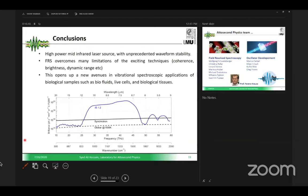Just to conclude, what I have shown is a very high-power mid-infrared laser source which has unprecedented wavelength stability. The slide I skipped shows we have attosecond-level stability in our measurement—few tens or hundreds of attoseconds, and attoseconds is 10 to the power minus 18 seconds. It overcomes many limitations of other techniques such as coherence, brightness, and dynamic range. Altogether, this opens up a new avenue of applications in vibrational spectroscopy. The graph shown here shows how bright this source is in this spectral region compared to the synchrotron.